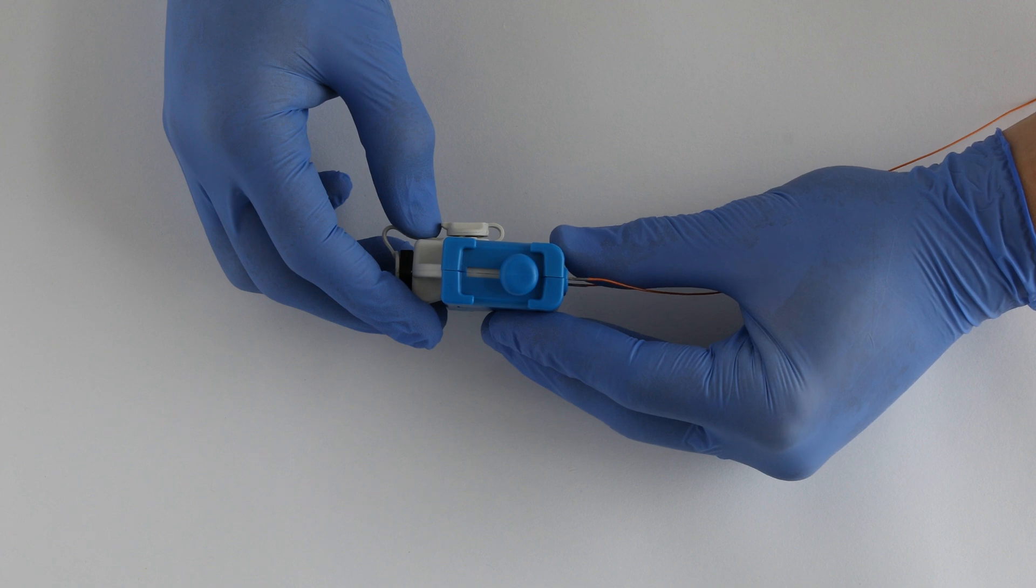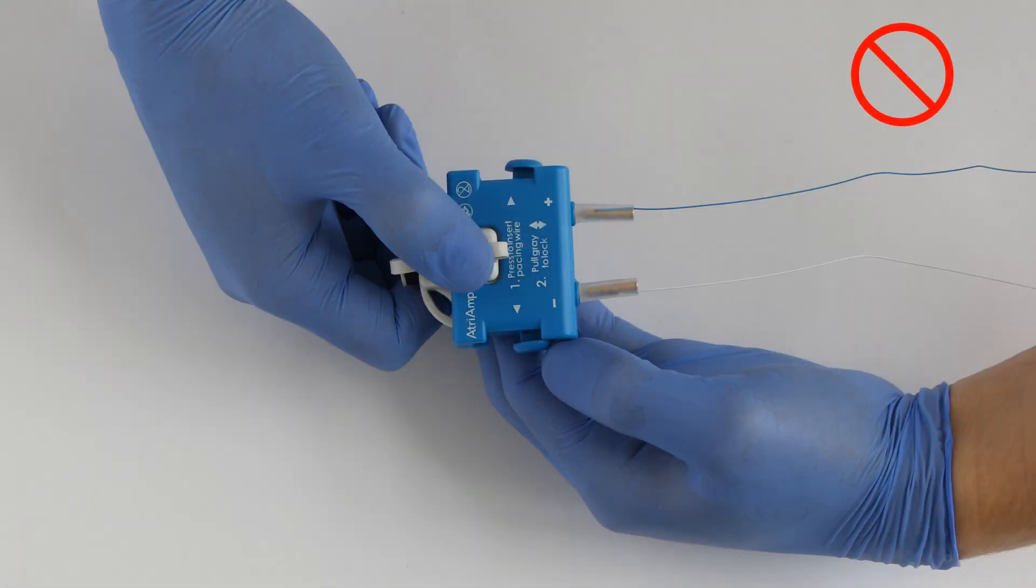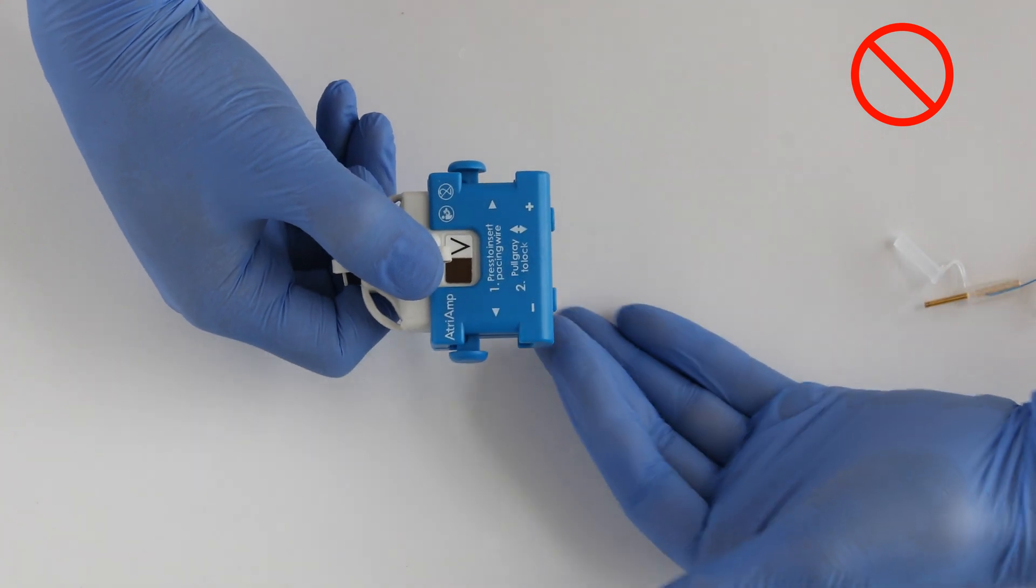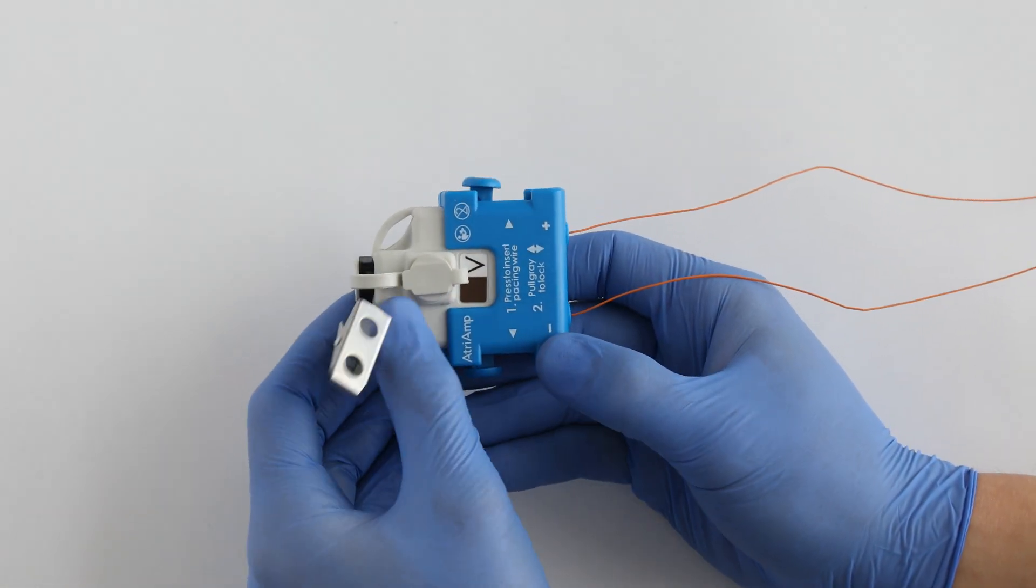Slide apart the gray and blue portions of the AtriAmp until the device clicks. Do not slide apart the pacing lead covers when using pacing wire leads that have wide plastic bases, as this could eject the pacing wires from the device. Secure the AtriAmp to the patient's gown or bed linen using the clip attachment.